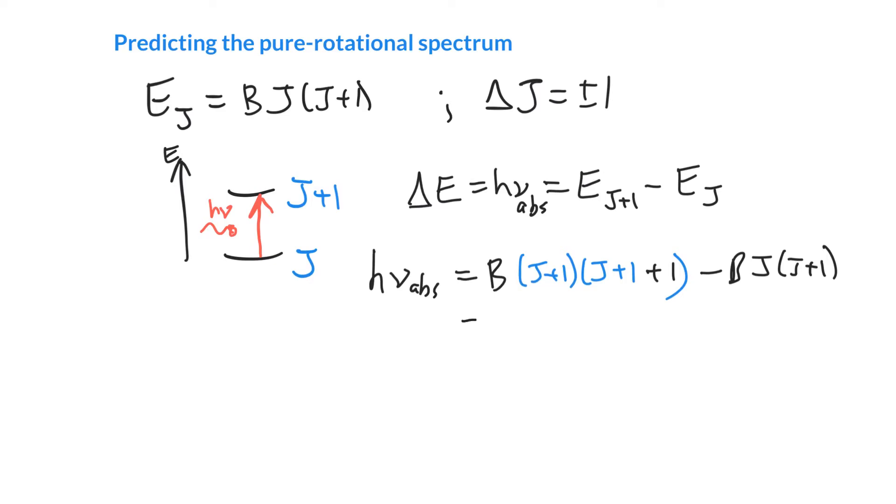We can simplify that expression. There's a B factor in both terms, so we can draw it up front. We've got (J+1)(J+2), that is J² + 3J + 2. The second term is J(J+1), so that's J² + J. We can cancel some terms. The J² is the same before and after. We're subtracting 1J from 3J, leaving us with 2J. That gives us B times (2J + 2).